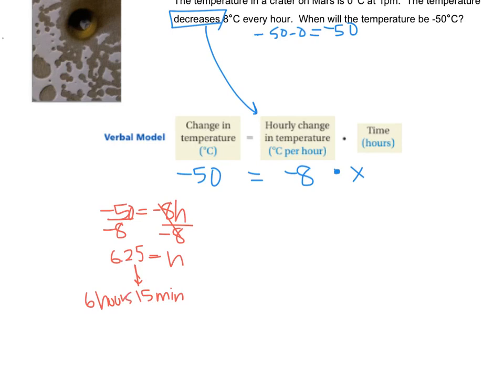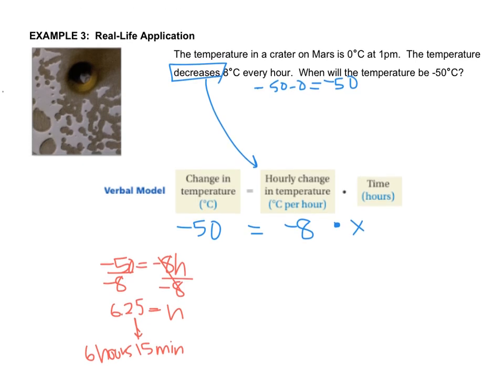So, now I have to figure out what time that is. So, I go up and I say it started at 1 p.m. So, what time is it 6 hours and 15 minutes later? So, plus 6 hours 15 minutes will give me 7:15 p.m. If you have any questions, write them down and ask me when you come to class. Thank you.